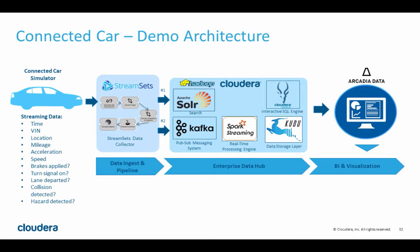The other thing going on is we're looking at certain events happening with these vehicles — such as was a collision detected, was a road hazard detected, or was an illegal lane change detected. I'm defining an illegal lane change as a lane change being detected without the presence of a turn signal. We're pumping those events into Apache Solr — Cloudera's search tool — which allows you to do faceted text and interactive search, slicing your data however you want in real-time. We're then visualizing all of this in an Arcadia Data Dashboard.